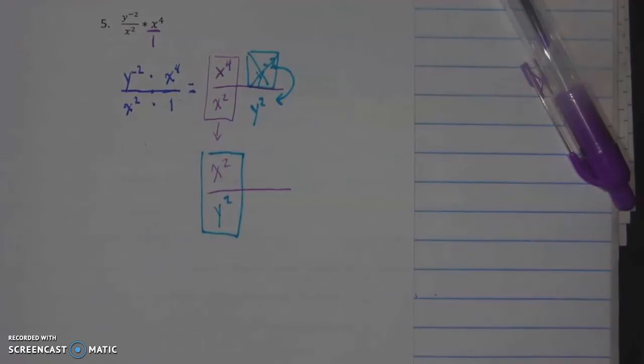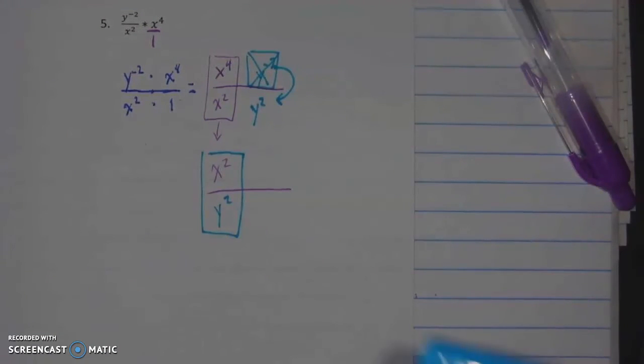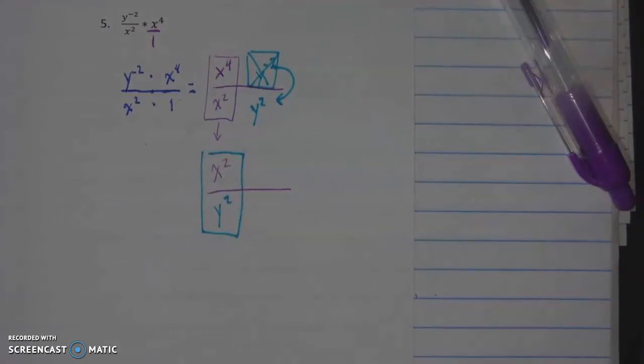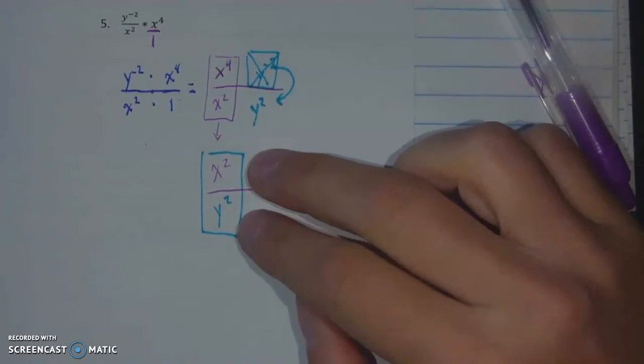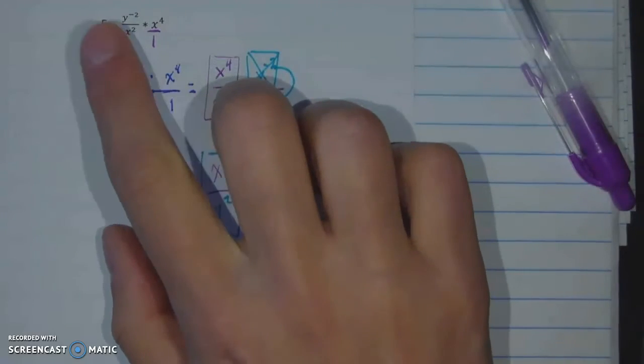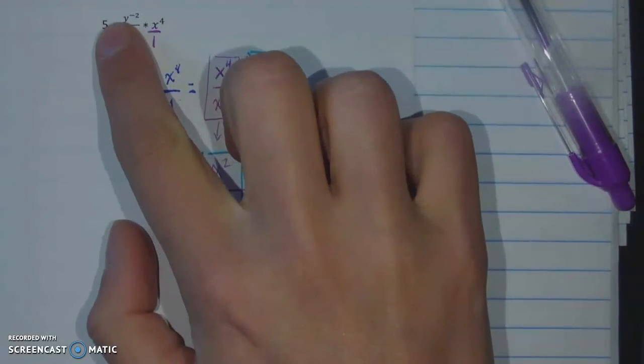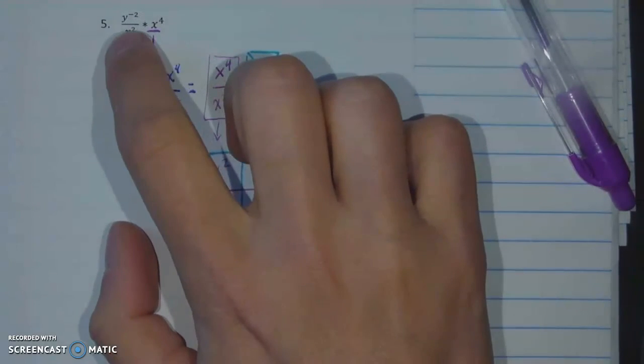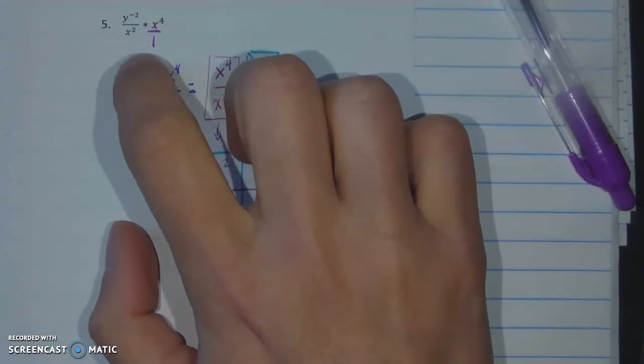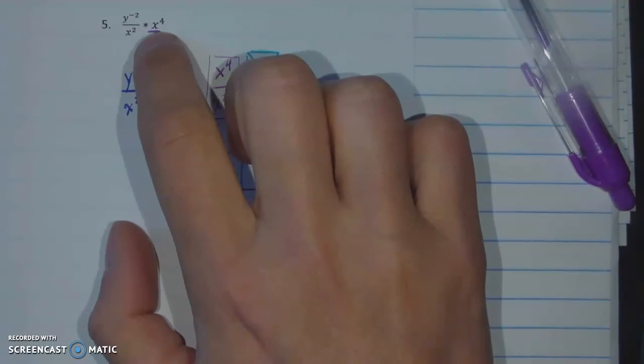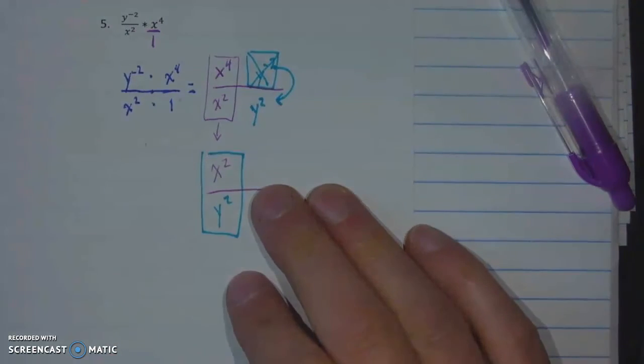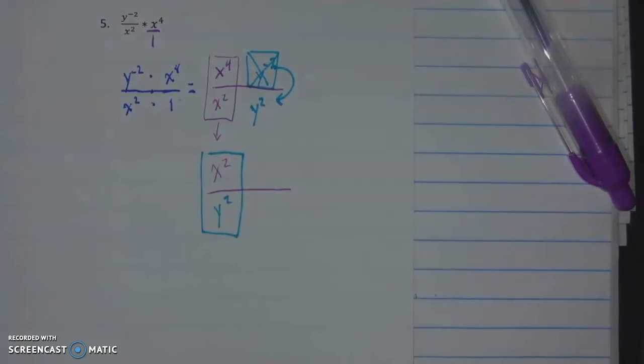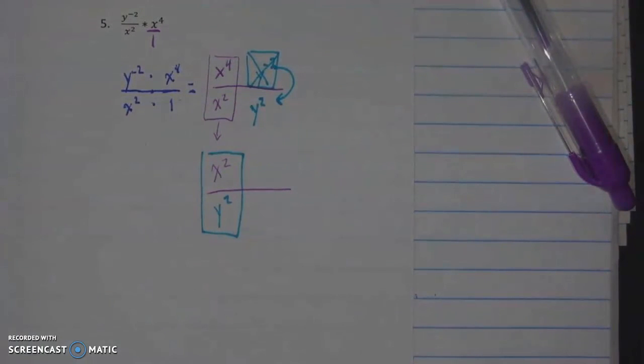Now keep in mind you can check all of these answers quite easily. Pick a value for x and pick a value for y. Don't use 0 or 1 because they do weird things when you square them. In other words, they don't really change. But pick numbers like 2 and 3. Put them into this. Should give you the same value as if you put those same numbers into here. So if I picked x equals 2, y equals 3. I'd put 3 to the negative 2nd over 2 squared times 2 to the 4th. Should give me the same answer as 2 squared over 3 squared. Go ahead and try that out if you don't believe me.